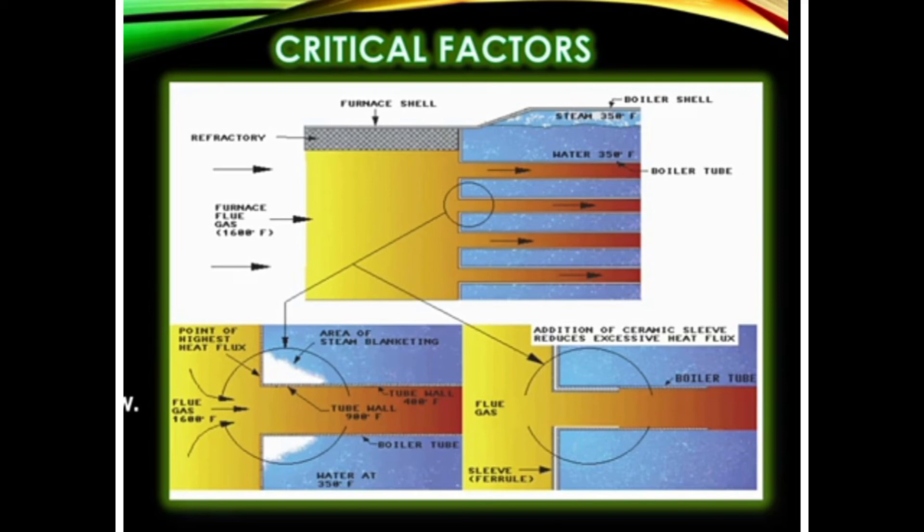Another reason for steam blanketing may be a disturbance in water flow or disturbed water circulation. If your water circulation is not proper and you have stagnant water at any part of the boiler tubes, this will also cause steam blanketing.